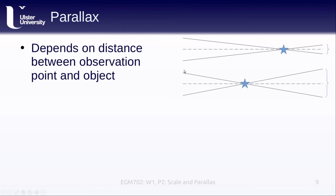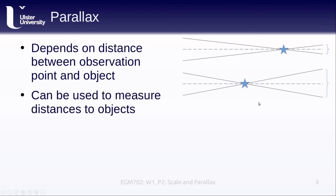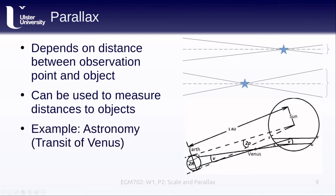Looking at a diagram, a star at a certain distance shows a certain amount of parallax as we move between two viewing stations. Moving the star closer produces significantly more displacement even though the viewing stations remain the same. This principle lets us measure distances to objects — it's how we measure height from multiple air photos, and it's used in astronomy. Before modern instrumentation, scientists used parallax to measure the Earth-Sun distance by observing Venus transiting the Sun from two different points on Earth.